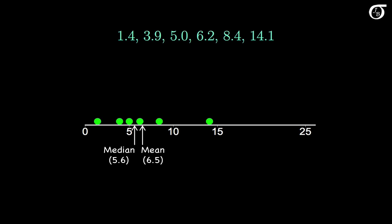We'll see that extreme values have much more of an effect on the mean than the median. And to illustrate that, let's see what happens when we change the largest value here, 14.1, to 26.1. Or in other words, we move this green dot way out here to 26.1.